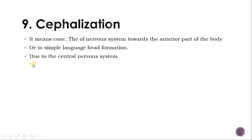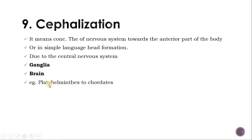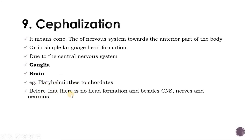Head formation is due to the central nervous system. Ganglia and brain develop into the anterior part of the body. Example is from Platyhelminthes to chordates. Before that there is no head formation; only a nerve net and neurons are found. In the central nervous system, ganglia and brain are found. In higher vertebrates there is a brain and spinal cord.